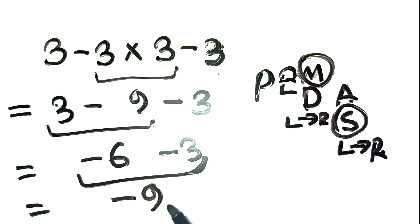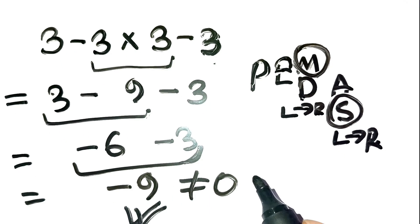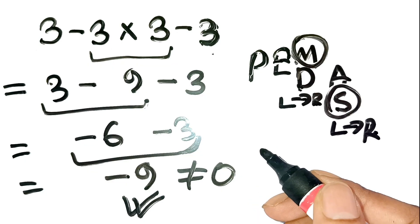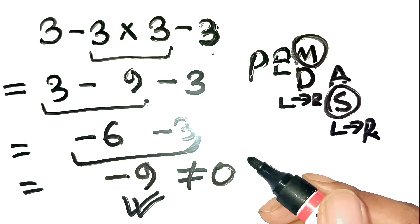So, the correct answer is negative 9, not 0. Surprising, right? It's amazing how one small misunderstanding of multiplication before subtraction can trick so many people.